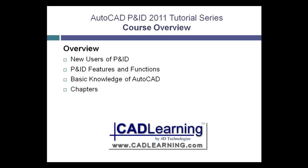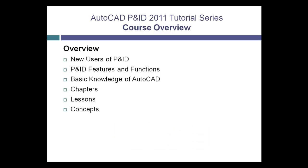The course is composed of chapters which are broken down into individual lessons. Each chapter typically has between 4 to 8 lessons which relate to the topic for that chapter. Basic concepts for AutoCAD P&ID are described, and each lesson within the chapter is presented using demonstrations for the features and functions relating to the chapter topic. To reinforce the material presented for each chapter, review questions and datasets are provided. Each dataset is an individual P&ID project that includes multiple drawings relating to the lessons covered in the chapter.